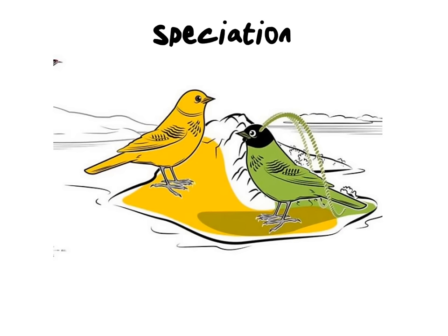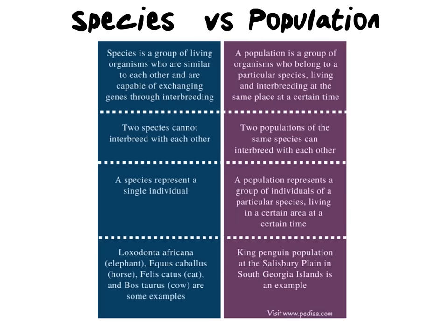We need to look at what is the difference between a species and a population. So let's begin with what exactly is a species. A species is an organism or a group of organisms that are similar to each other and they are capable of exchanging genes through interbreeding.